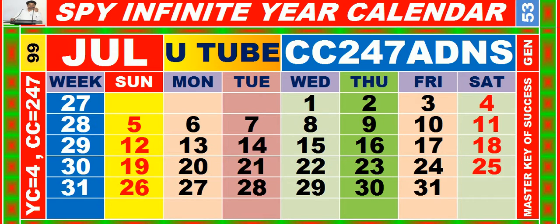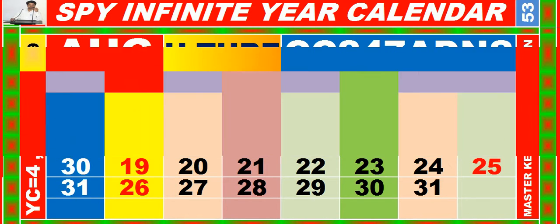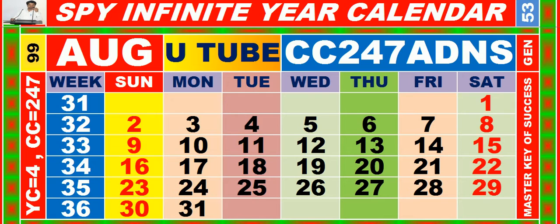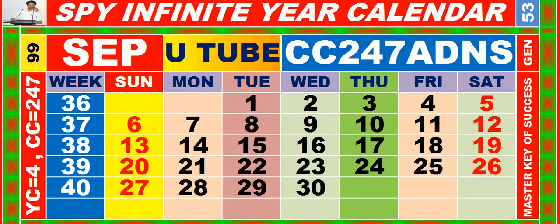Calendar for the month of August, having calendar code equal to 247. Calendar for the month of September, having calendar code equal to 247.